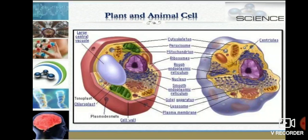In the center of the plant cell, large vacuoles are present, but in animal cell the vacuoles are smaller. Because of the large vacuoles in the center of the plant cell, the nucleus gets shifted to the periphery. In animal cells, the nucleus is found in the center.